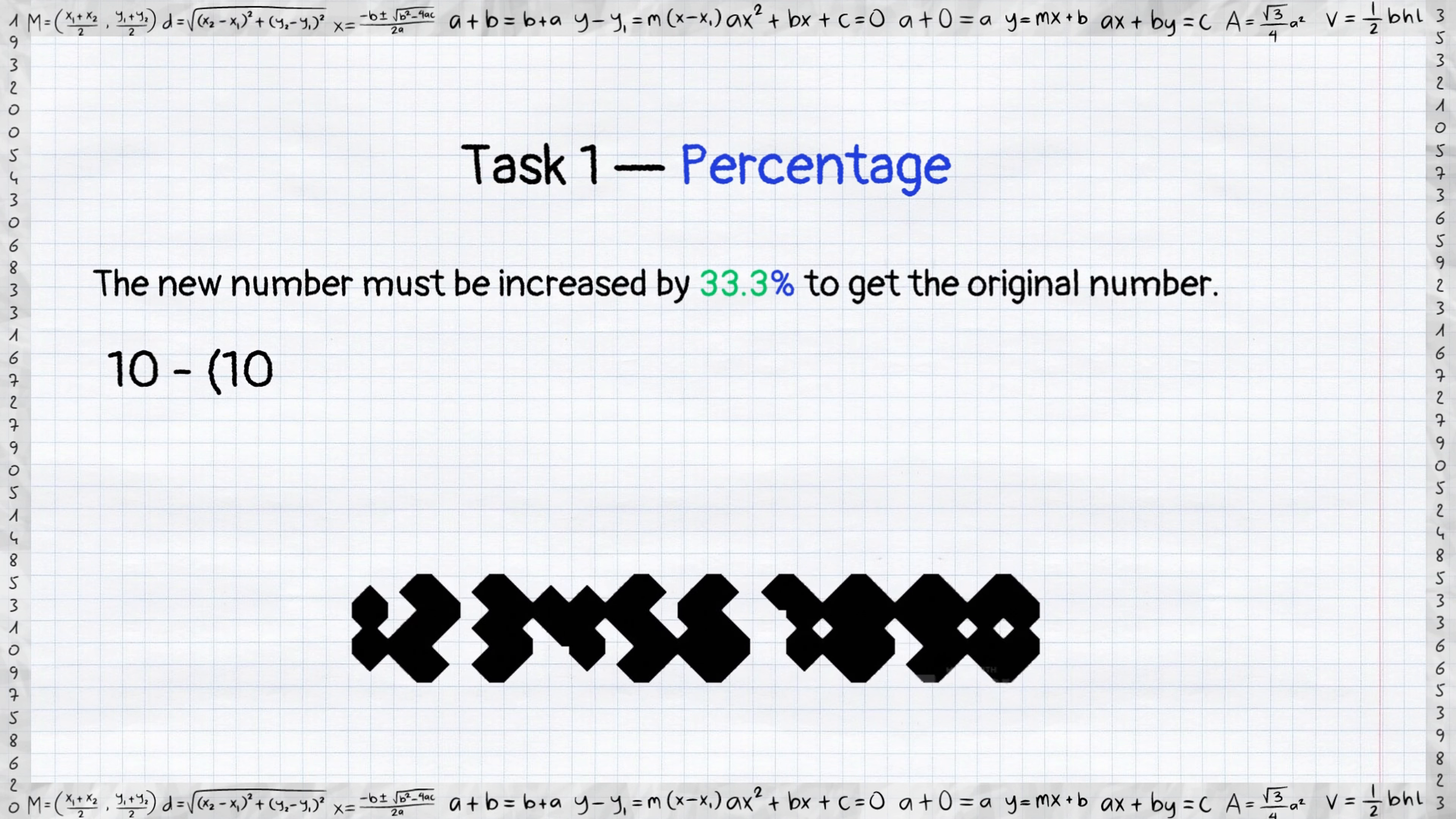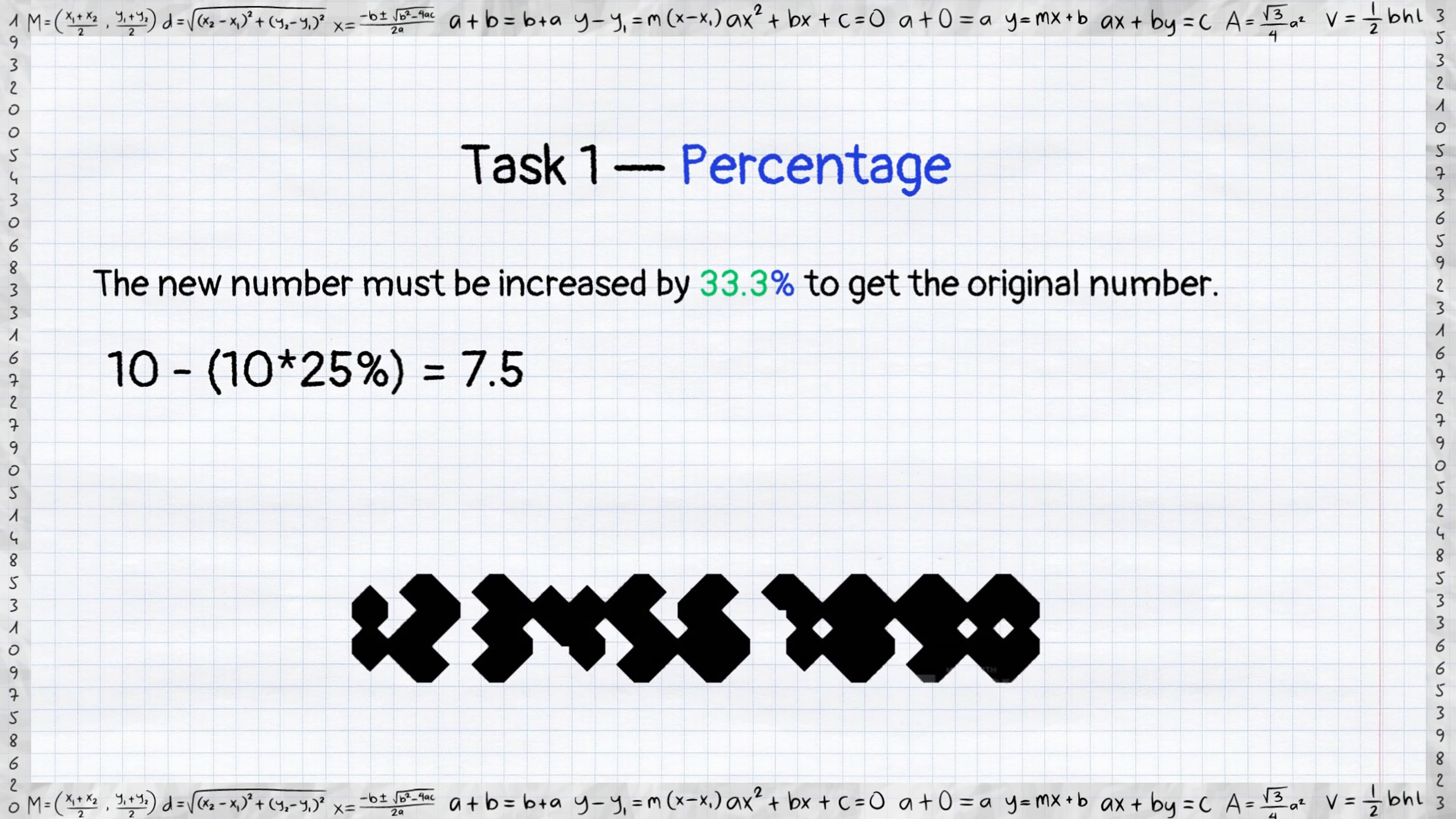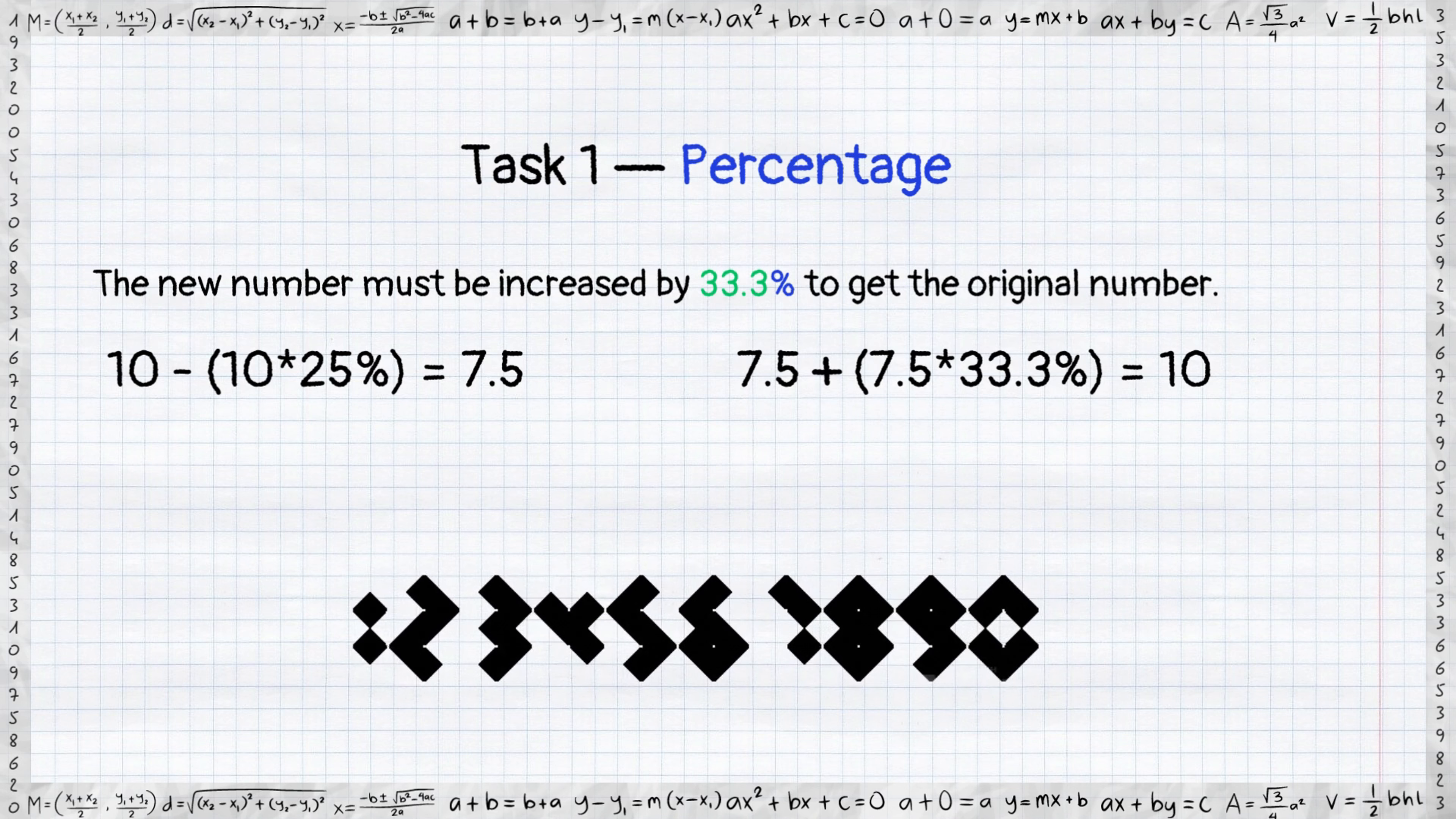Take for example the number 10. Reduce it by 25% and you'll get 7.5. Then increase it by 33.3%. Just make simple calculations and that's it. We get 10.